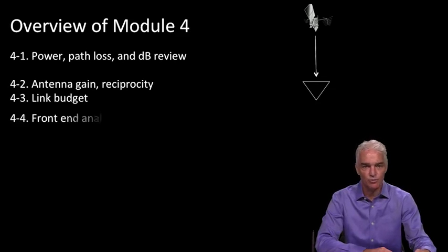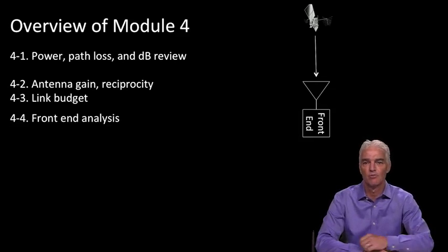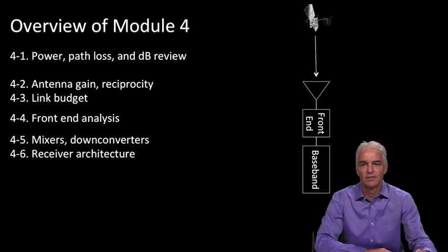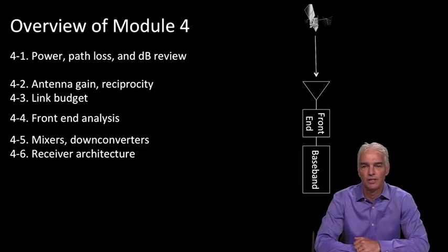At that stage, we can then look at the radio part of the receiver known as the front end, and we'll do the analysis of the front end of the receiver. Then we will look at the digital or baseband part of the receiver. In between, we'll take a short aside to analyze mixers and downconverters, which are a very important part of a receiver.